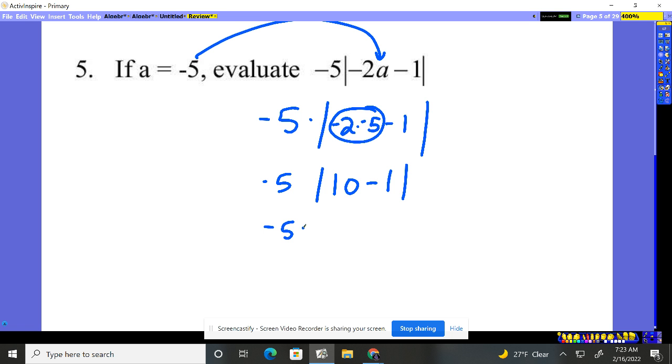So negative five times what is this? This just gives you nine. What's absolute value of nine? Nine. And we end up with negative 45 as our answer.